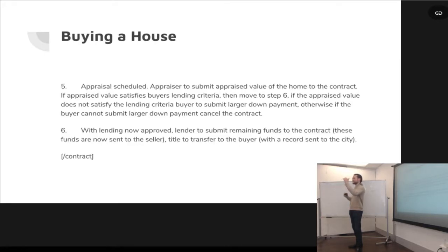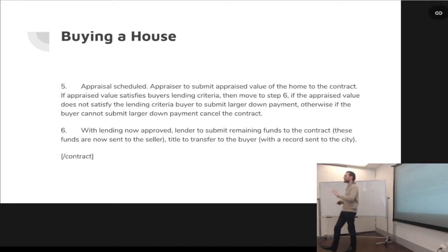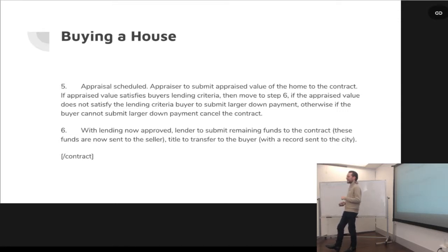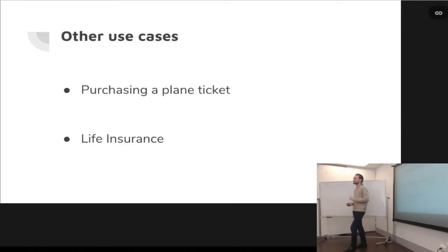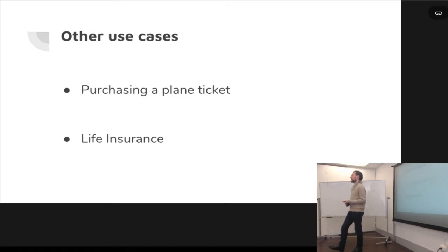I was going through use cases. One that I was reading about is someone who wants to use smart contracts for purchasing a plane ticket. You go to their website, buy a plane ticket, and they send you some type of token or ticket.